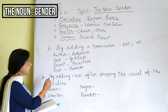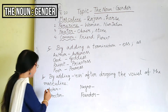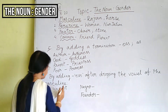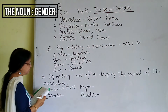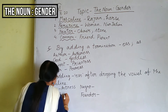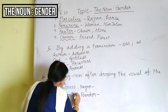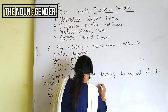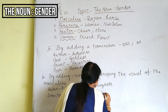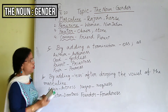The next method is by adding -ESS after dropping the vowel of the masculine ending. For example: actor — the vowel O is dropped — becomes actress. You will observe that in each example the final vowel O is dropped before adding -ESS.